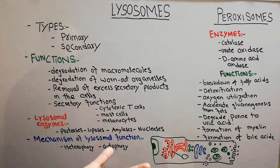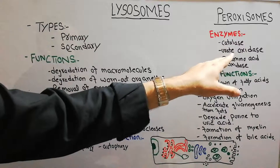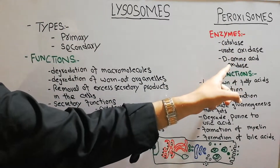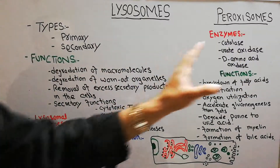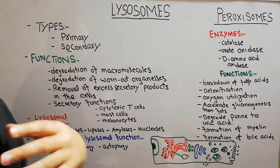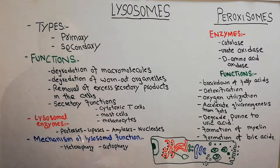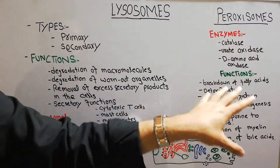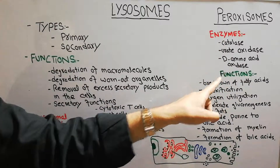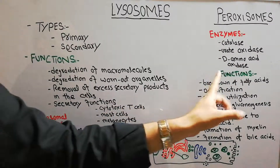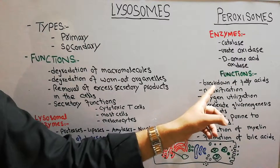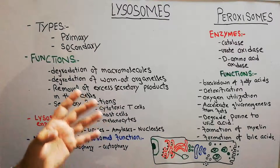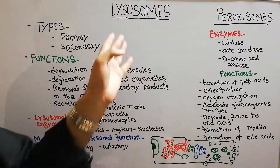Some of the important enzymes in peroxisomes are catalases, urate oxidases, and D-amino acid oxidases. These are required in different digestive functions at different steps, which will be discussed in coming lectures. Some important functions of peroxisomes include breakdown of large fatty acids — large fatty acids are specifically broken down by peroxisomes, though they may also be broken down by lysosomes via lipases.